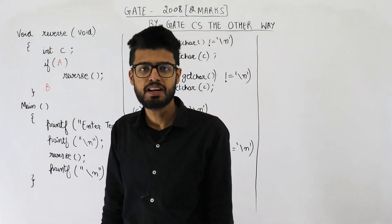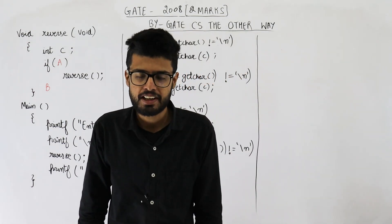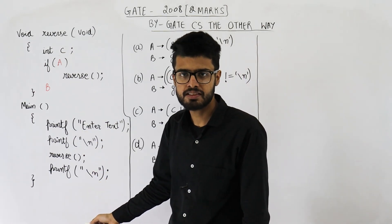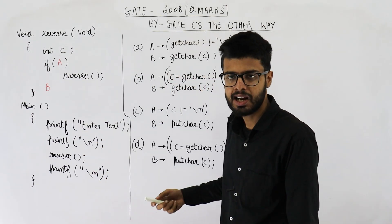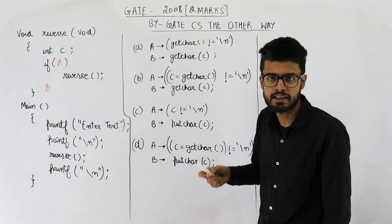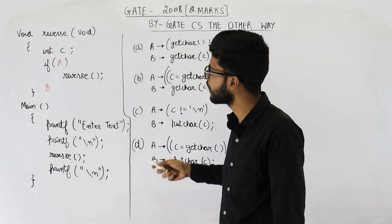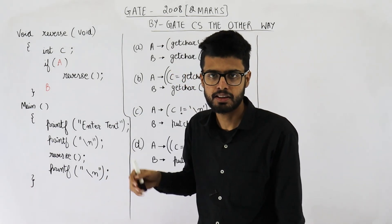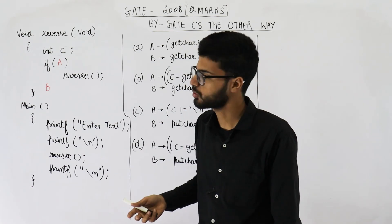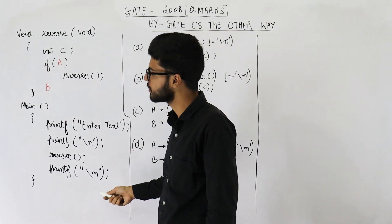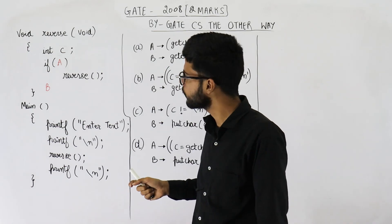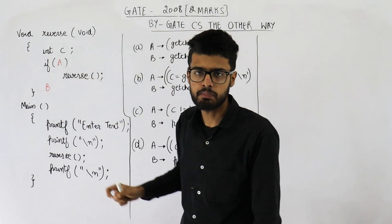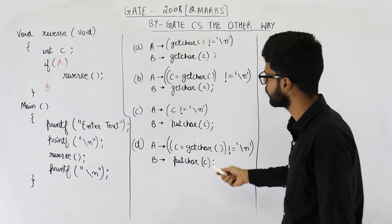Hello everyone, welcome back. This is a 2-marks question from the GATE 2008 exam. They have given you a program to reverse a string entered by the user. For example, if the user enters A, B, C, this program will print C, B, A on the screen — the same string but in reverse order. This program is incomplete, and they are asking what must be written in place of A and B to complete it. These are the four options.